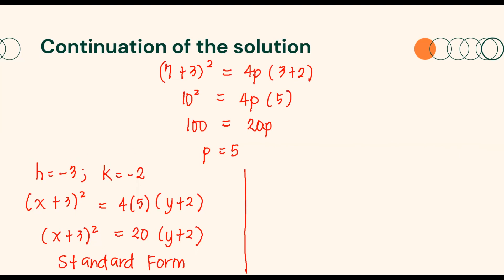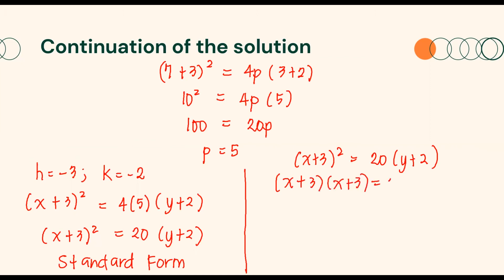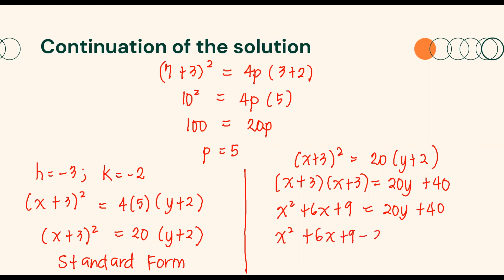Rewriting this equation in standard form to general form. We need to expand the left side and distribute 20 to the binomial (y plus 2). Therefore, (x plus 3)(x plus 3) equals 20y plus 40. Simplifying: x² plus 6x plus 9 equals 20y plus 40. Isolating all terms to the left side: x² plus 6x plus 9 minus 20y minus 40 equals 0. Combining 9 and negative 40 and rearranging the terms, we will have x² plus 6x minus 20y minus 31 equals 0.